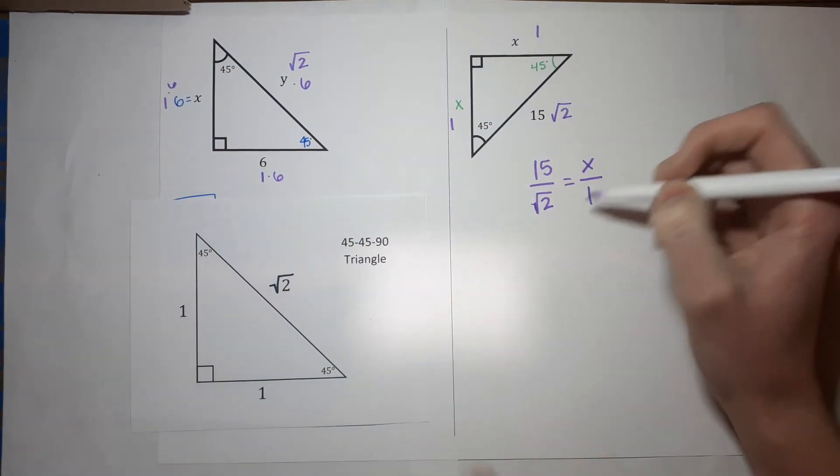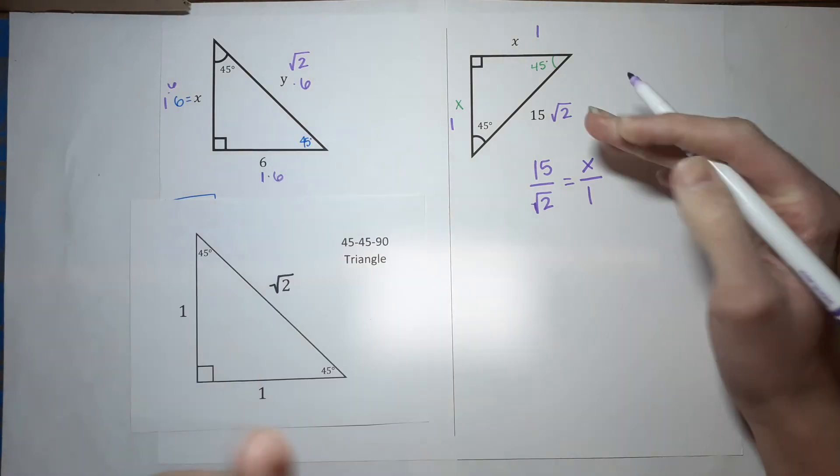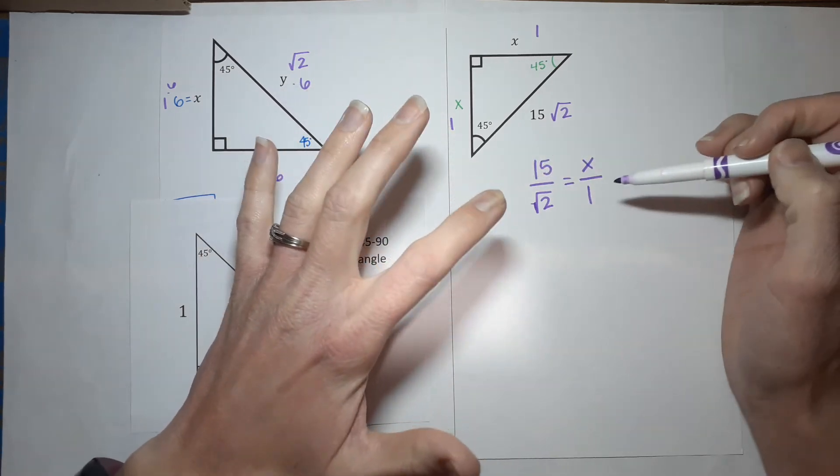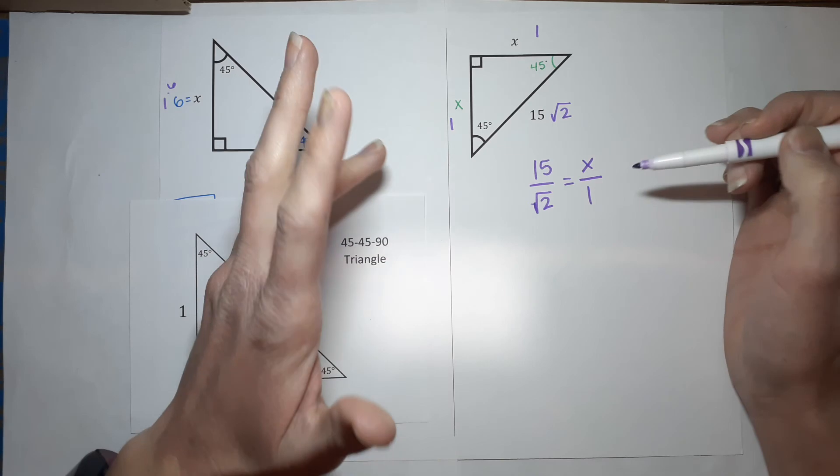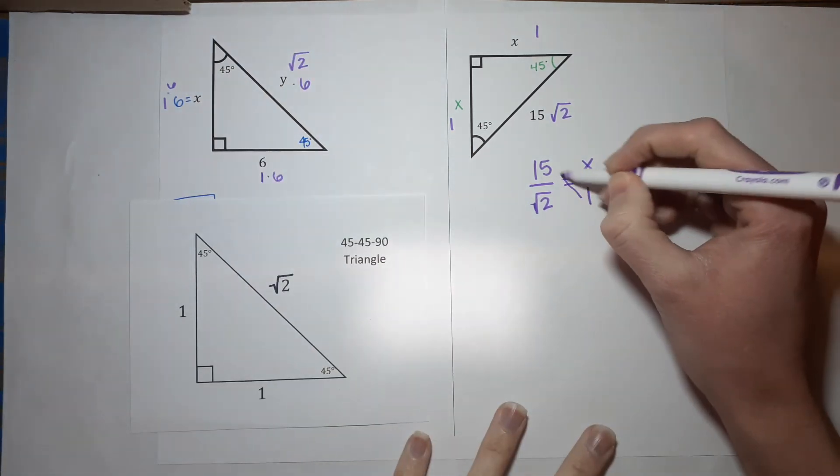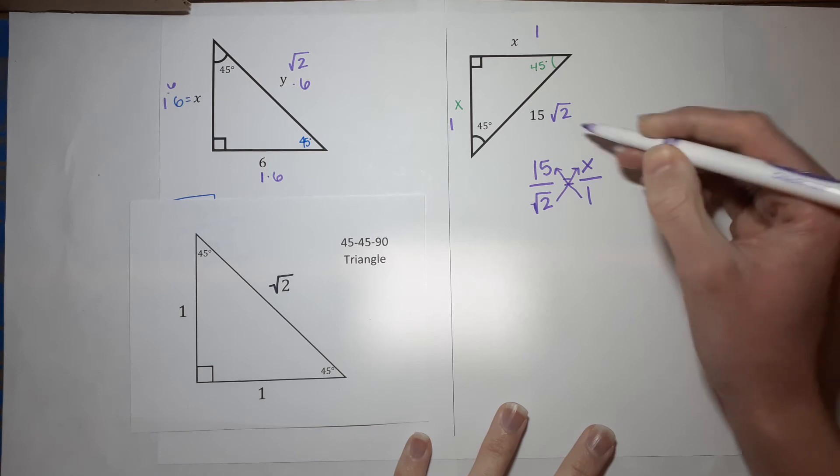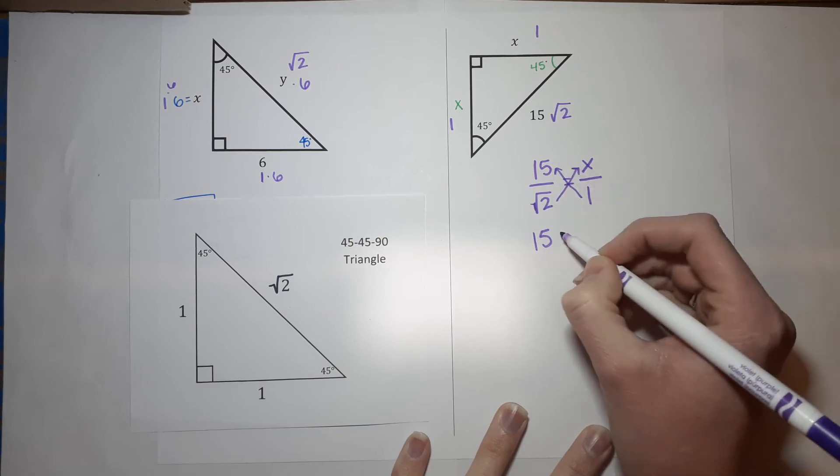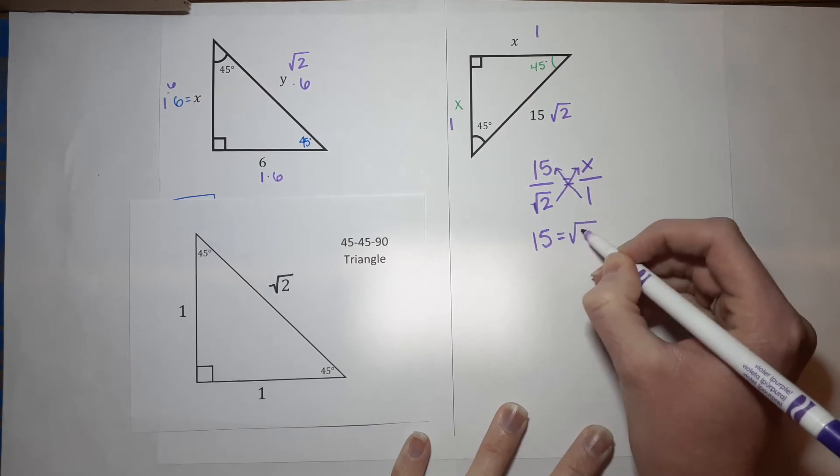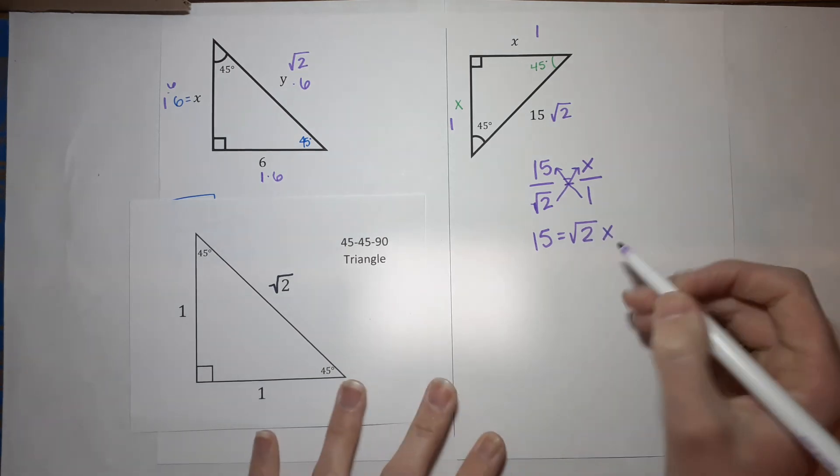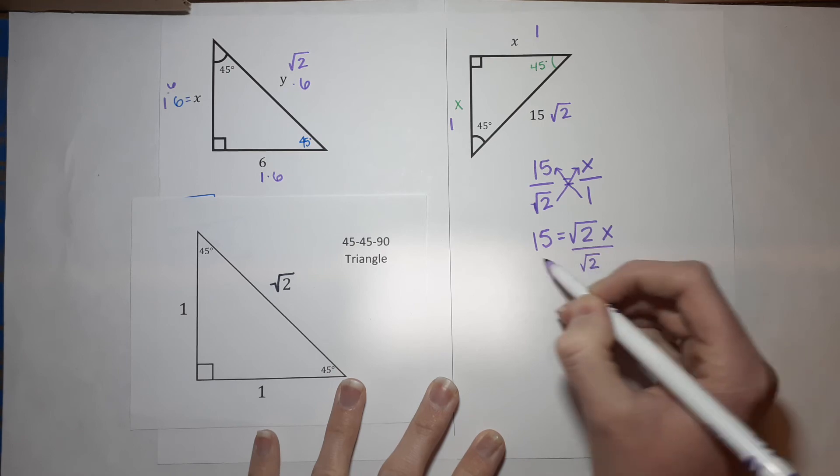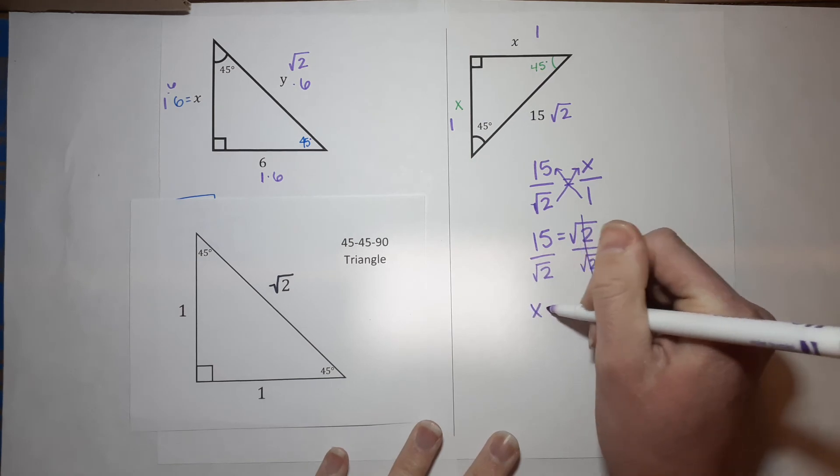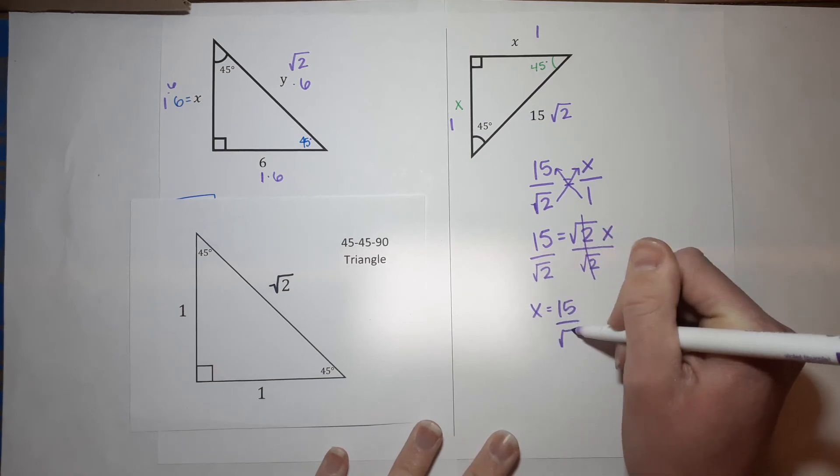So 15 is related to the square root of two the same way that X is related to one. Does that make sense? Their relationship is the same. So then technically this is already done because it's over one, but we're going to pretend it's not done. For proportions, what you do is you cross multiply. So we cross those. So over here, I'm going to have 15 because it's one times 15 equals the square root of two times X. Then I just want X alone. So I'm going to divide off the square root of two and divide off the square root of two. So those cancel and I'm left with X equals 15 over the square root of two.